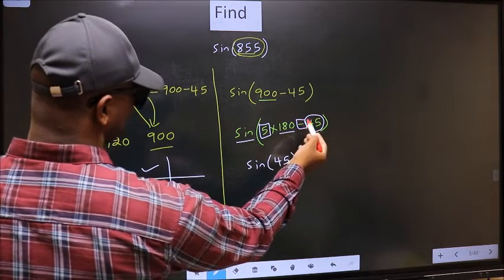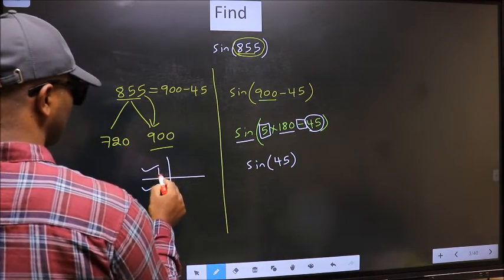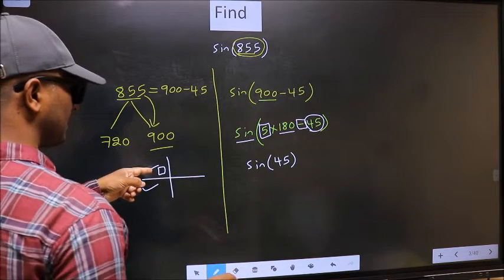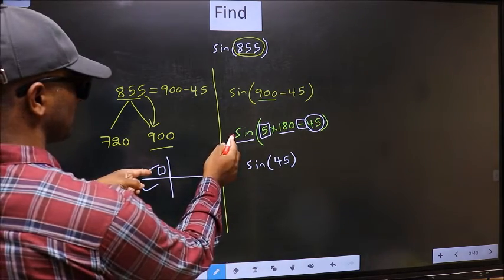Here we have negative. That means the angle lies in the second quadrant. And in the second quadrant, sin is positive.